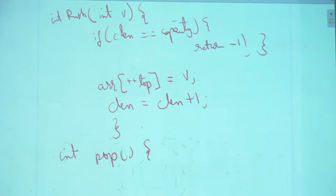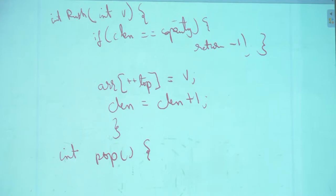If cLength equals zero, return minus one, or give a message and then return. This is what we call the guard code — checking the sanity of the operation. When you write a function, first check the parameters: can this be done? That's the guard code at the top — I will not allow the code to fall through unless it has passed through the guard.